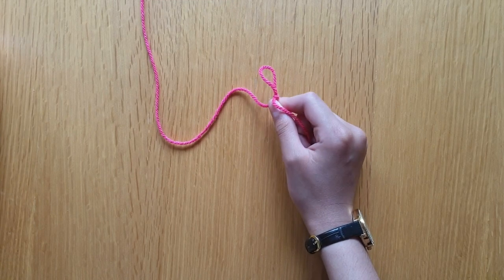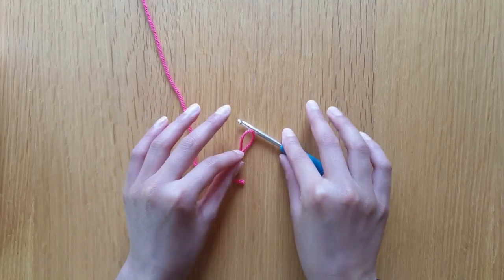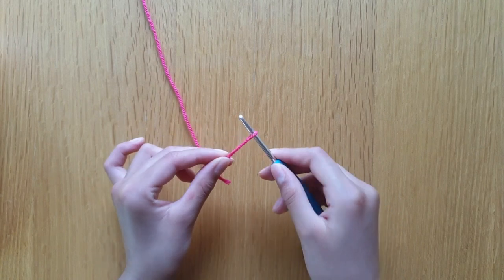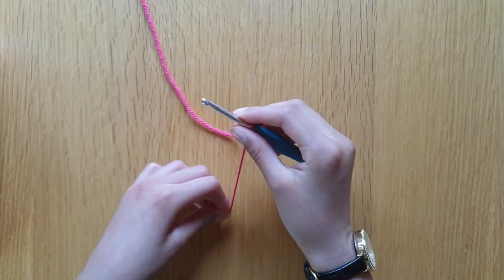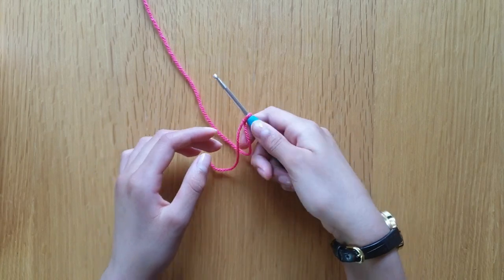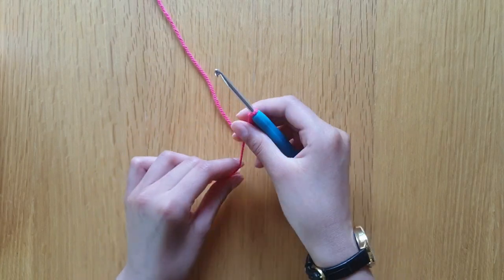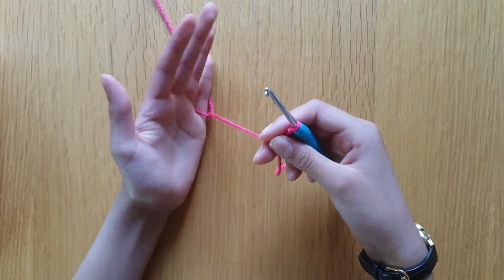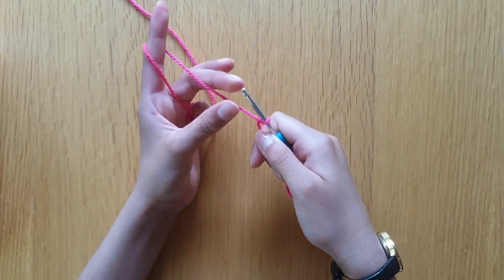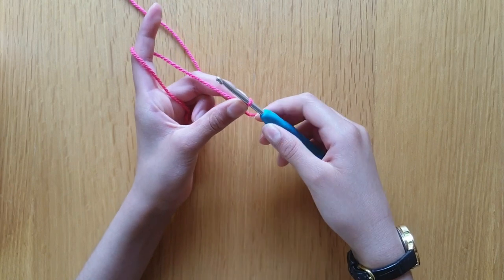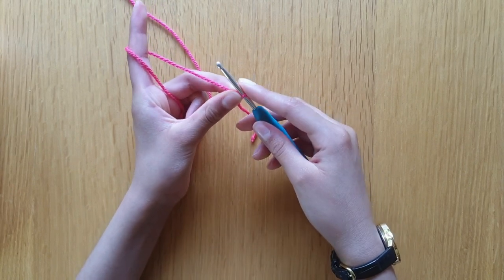Now I'm going to insert my hook into the loop and pull on the end. Put my thumb on the hook. Wrap the yarn around your pinky finger and around this finger. Hold the work with your middle finger and thumb like that.